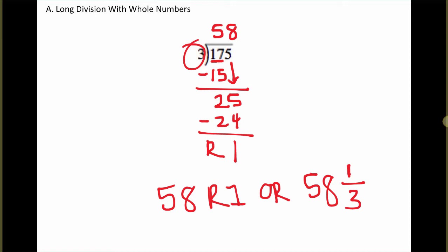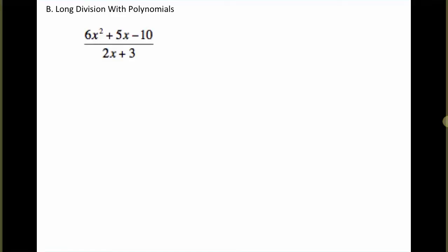Now the reason I like to review that is because we're going to be using those same ideas when we do long division with polynomials. So if you look at your handout, this is the first example under long division with polynomials. Here we're taking 6x squared plus 5x minus 10, and we'll divide the entire expression by 2x plus 3. Now you can't just cancel something from each part individually. Instead, we have to look at each of them as an entire expression.